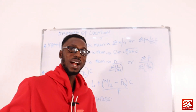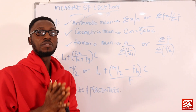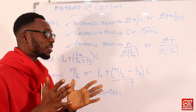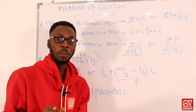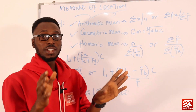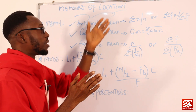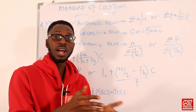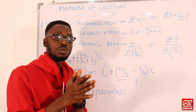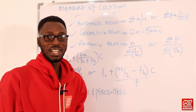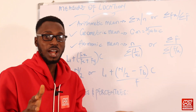Welcome back. Right here we have before us the measure of location, or measure of central tendency. So what does this mean? Measure of location is talking about the tendency for some sets of given data to revolve around the center or the middle. You can refer to this as a measure of central tendency — that statistical information that tells you this is the middle or the center of a given set of data.